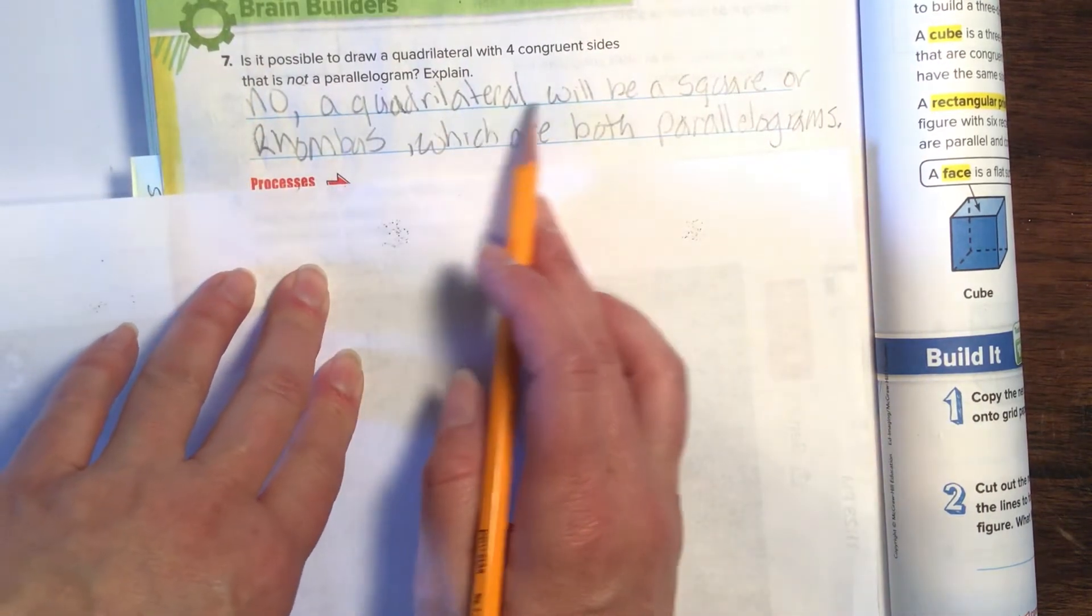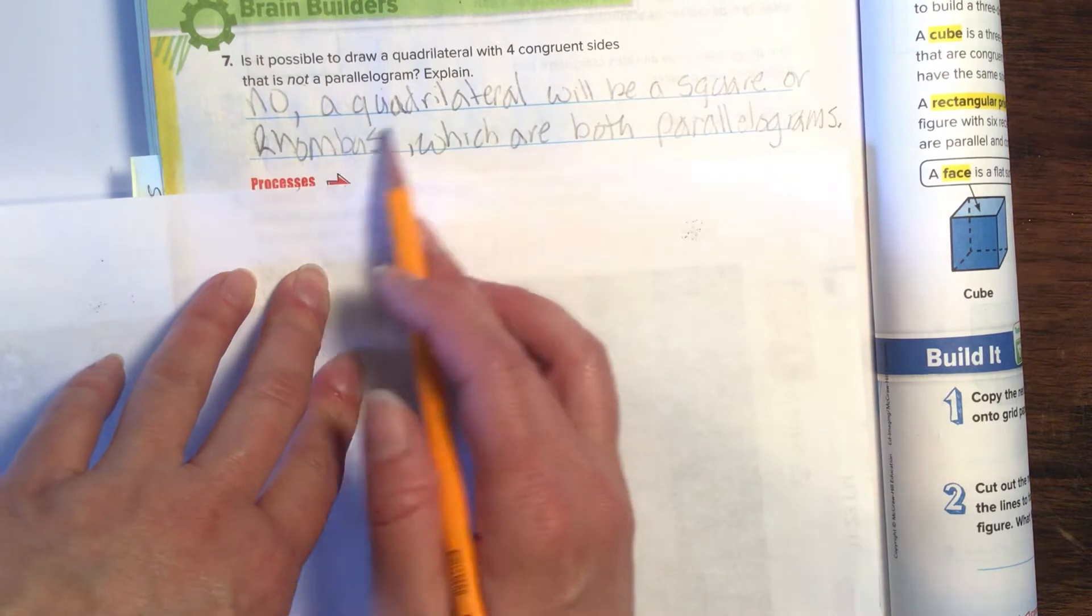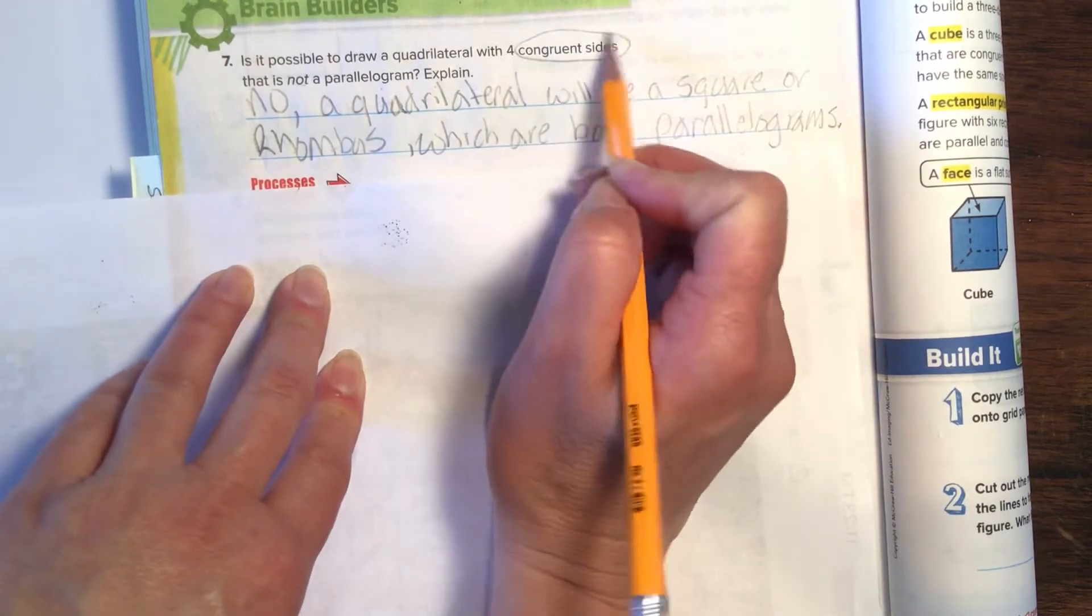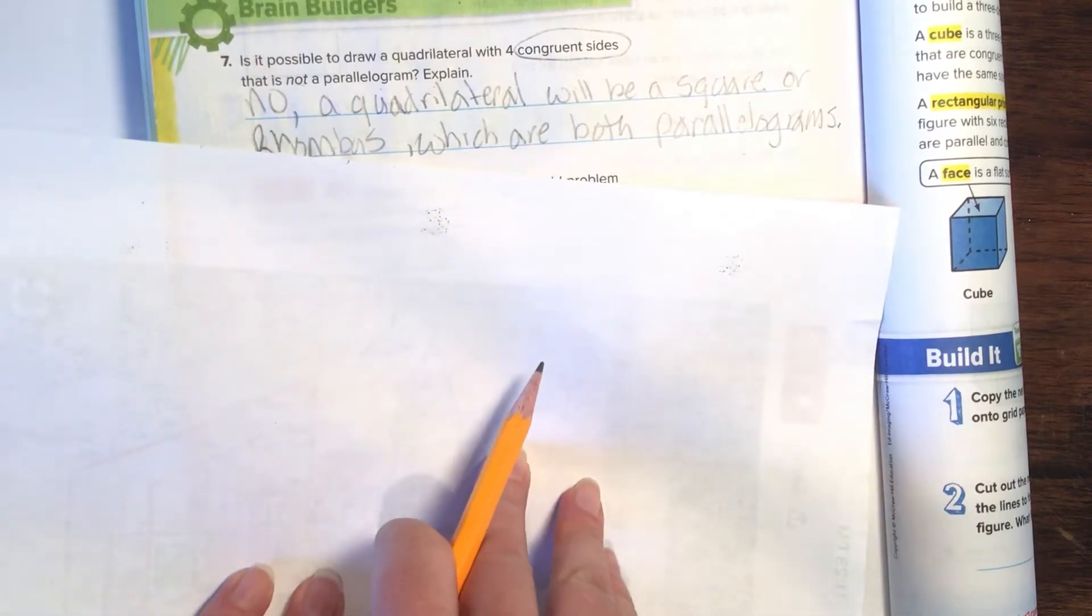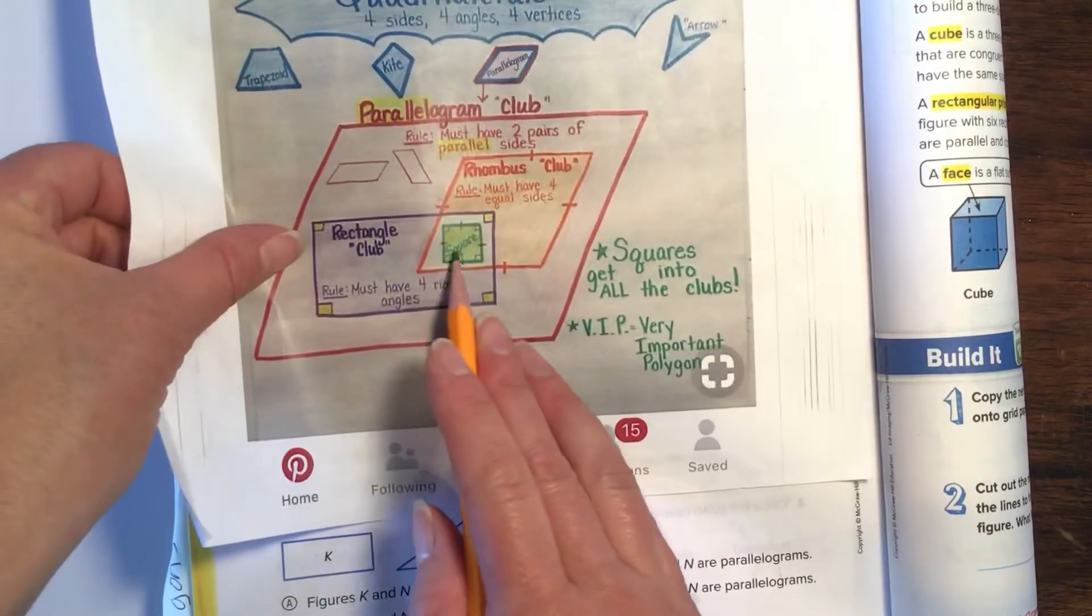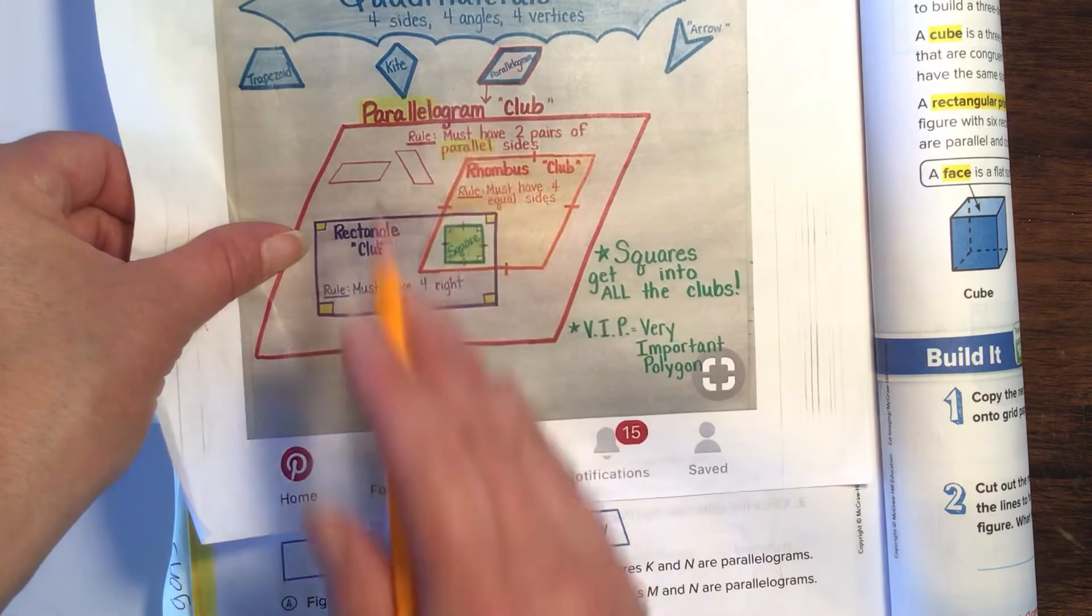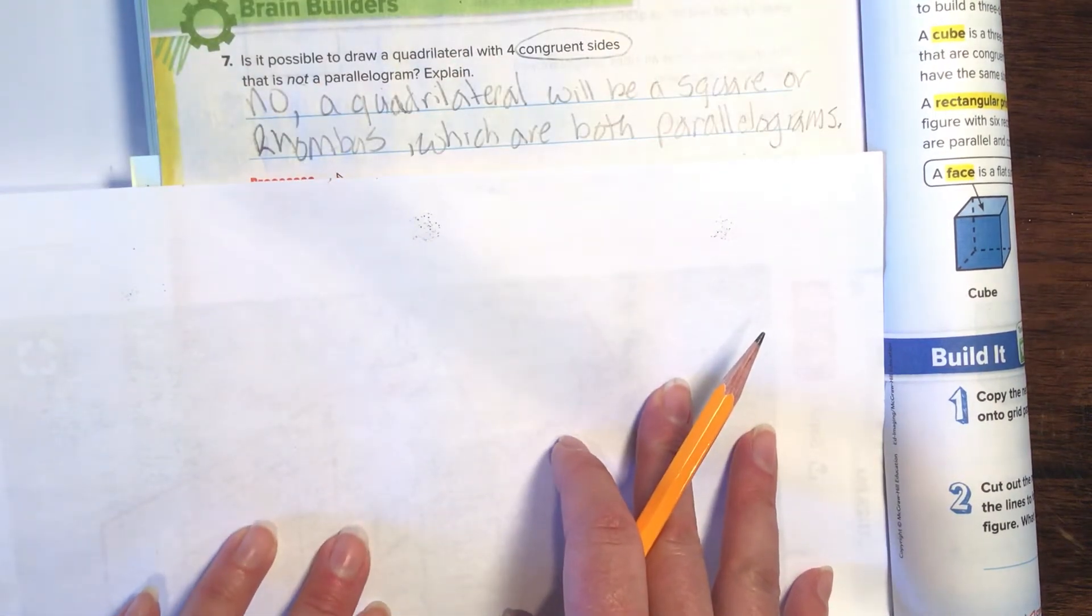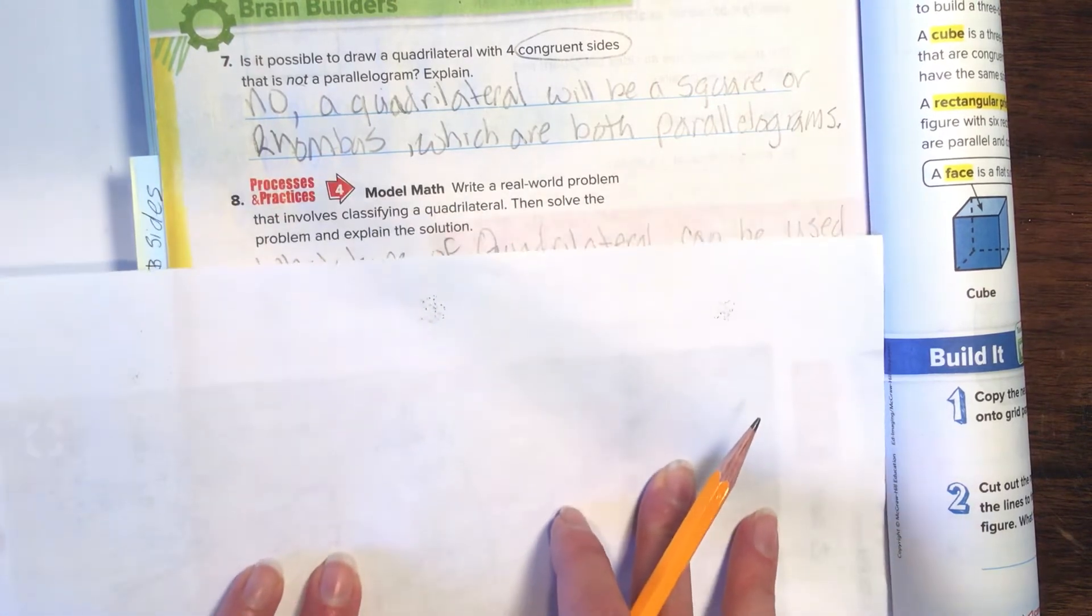No. A quadrilateral will be a square or a rhombus, which are both parallelograms. Because remember, it has to have congruent sides. So for it to have congruent sides, it'll be a square or a rhombus, and that is in the parallelogram side. So that is not possible. Push pause if you need to.